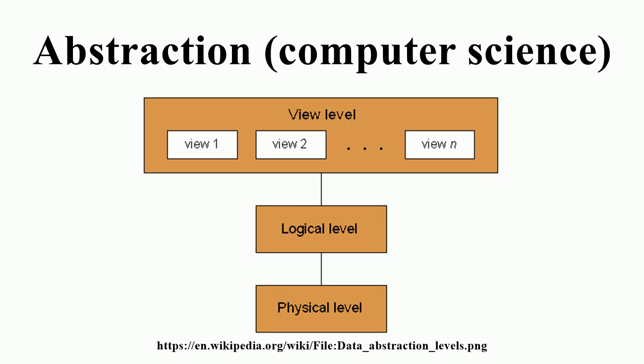Some abstractions try to limit the breadth of concepts a programmer needs by completely hiding the abstractions that in turn are built on. The software engineer and writer Joel Spolsky has criticized these efforts by claiming that all abstractions are leaky, that they can never completely hide the details below. However this does not negate the usefulness of abstraction.